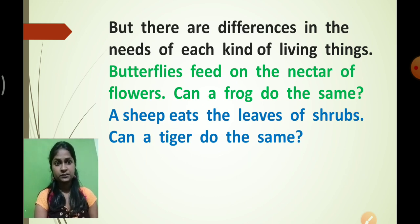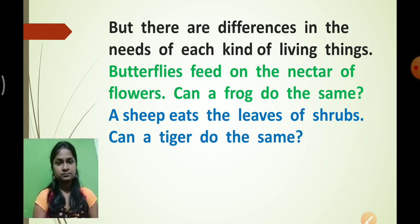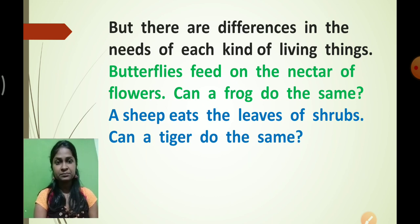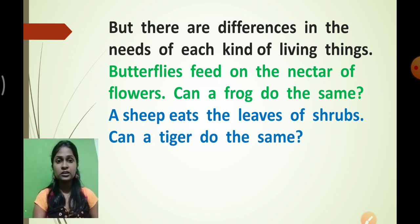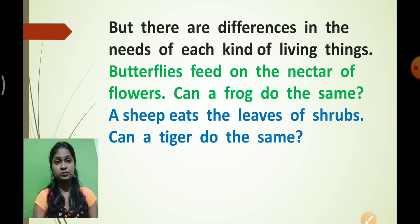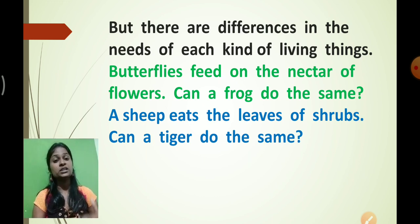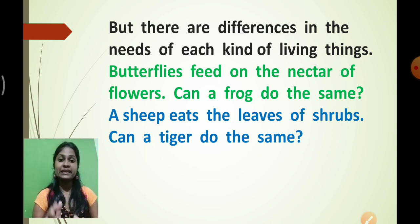Butterfly feeds on the nectar of the flower — can a frog do the same thing? Of course not. A sheep eats the leaves of shrubs — can a tiger do the same thing? Of course not. That means there are different varieties of animals around us that have different types of food. Depending upon the source of food the animal consumes, animals are divided into two parts.